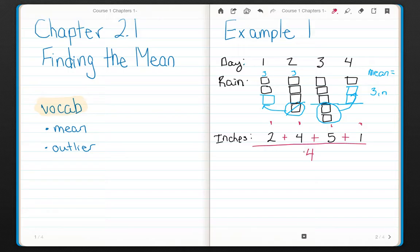To solve this, 2 plus 4 is 6, 6 plus 5 is 11, and 11 plus 1 is 12. So this would equal 12 inches divided by 4 days.